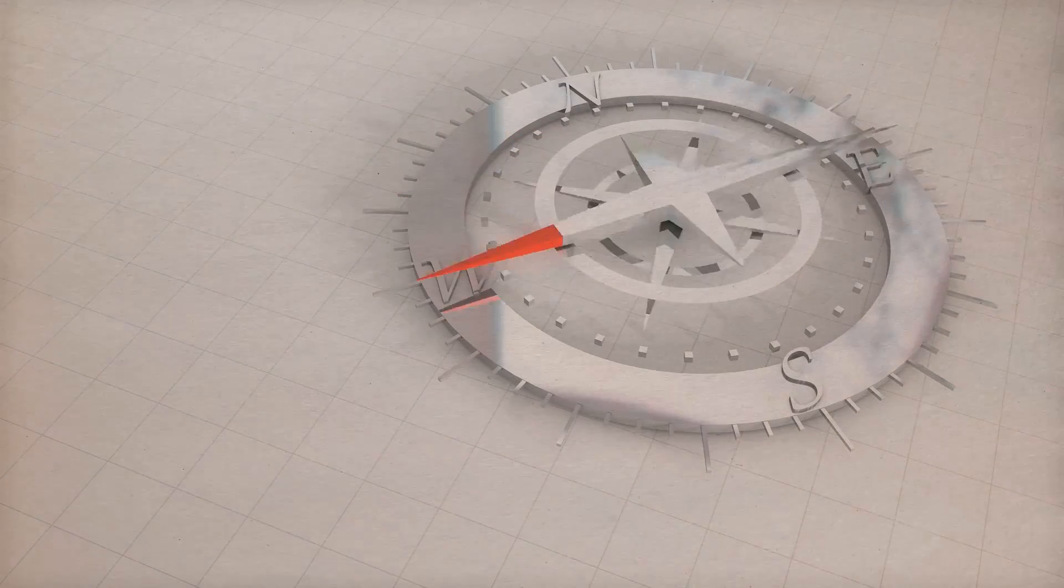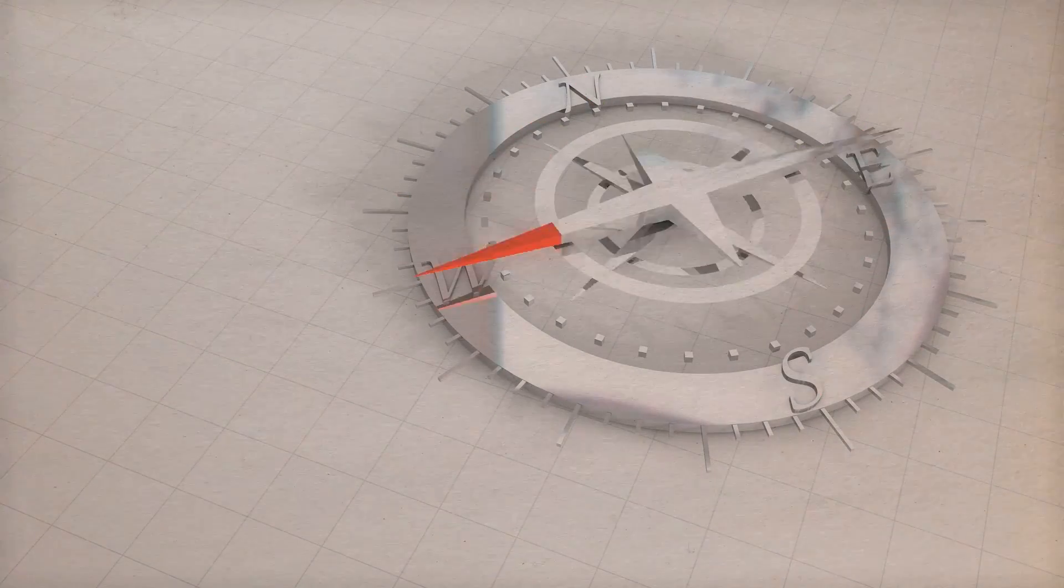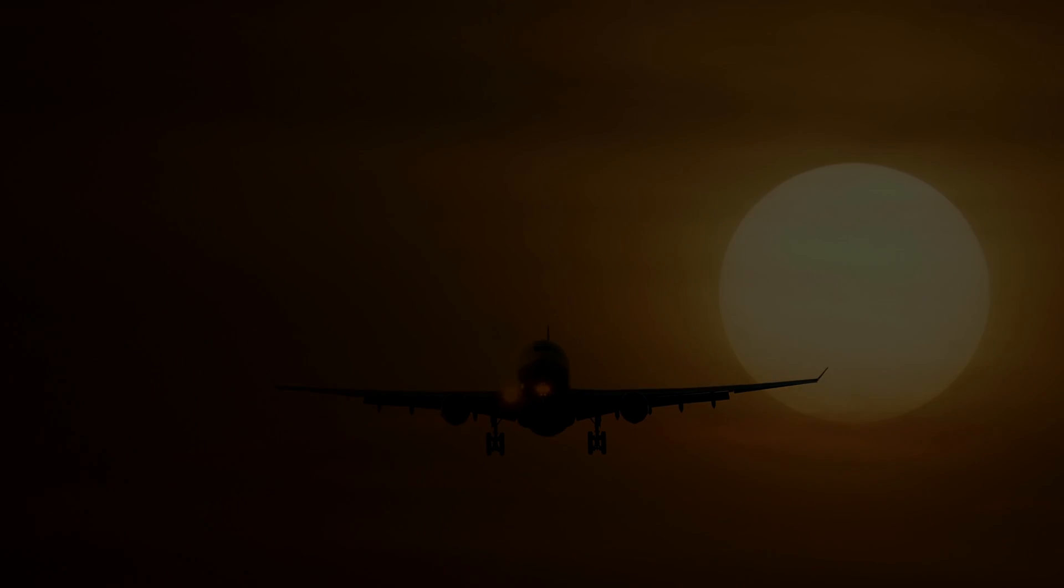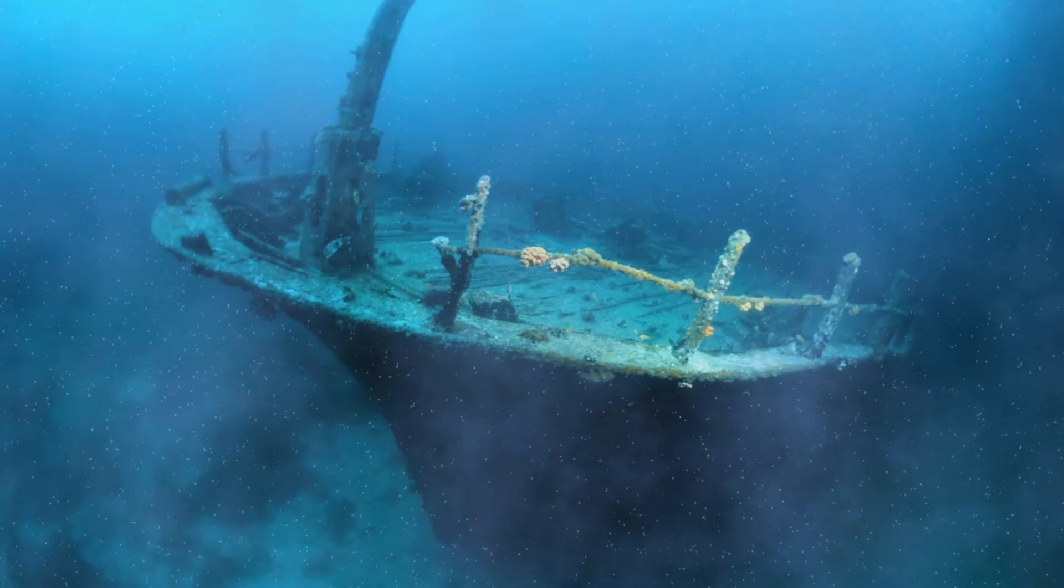The Bermuda Triangle appears to have a problem with compasses, causing planes to lose all of their navigational data from there. These and other instances have become part of the Bermuda Triangle's legend. These tales are frequently woven together to suggest that something sinister lurks beneath the Atlantic Ocean's surface.